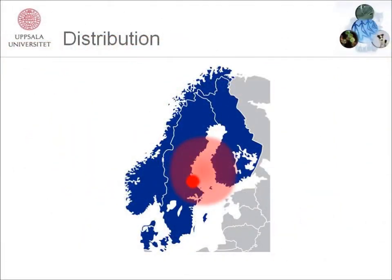My main interest is to identify gene variants behind genetic disorders, and in this particular project we have identified the genetic background to Vellander distal myopathy. This map of Scandinavia with Sweden in the middle indicates the distribution of the disorder, mainly in the middle part of Sweden and western part of Finland.